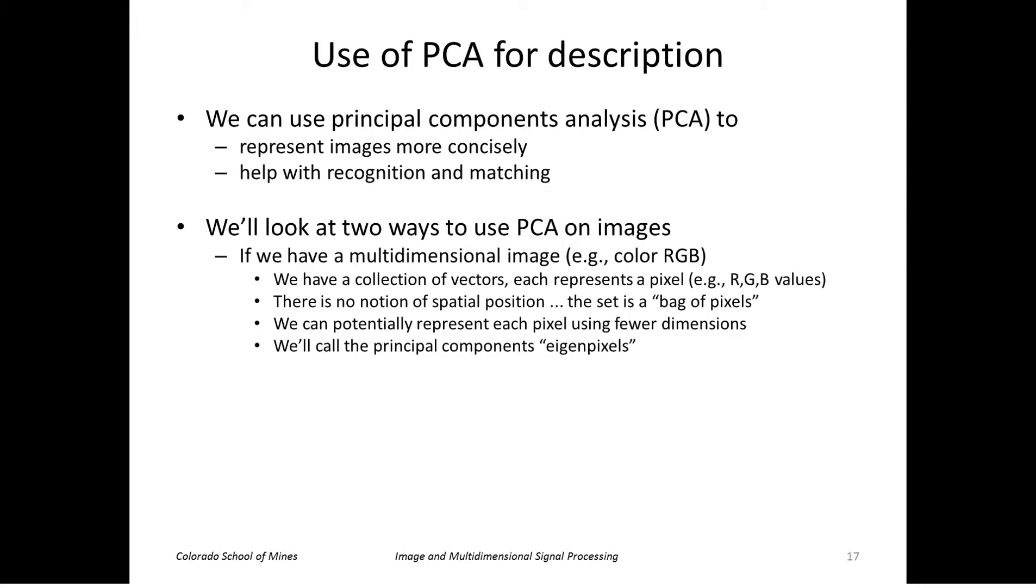We'll look at two ways to do this. First, if we have a multi-dimensional image, let's say a color image with RGB pixels, red, green, blue, we have basically a collection of pixels. Each pixel has three dimensions, RGB. We're not going to consider them as really an image, it's really just a collection, an unordered set or a bag of pixels. So we could potentially represent each pixel using fewer than three dimensions, let's say one or two, and we'll do that by using principal components. In this case, we'll call these principal components eigenpixels or eigencolors.